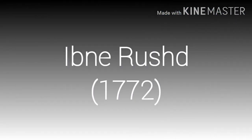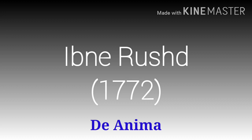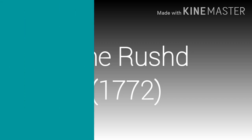Next is a famous Muslim scientist Ibn Rushd. Ibn Rushd woh Musalman scientist hain jinhon ne Arastu ki kitab 'De Anima' ka Arabic mein tarjuma kiya, taake jo Muslim dunya hai woh bhi Arastu ke kaam se zyada se zyada faida utha sake.